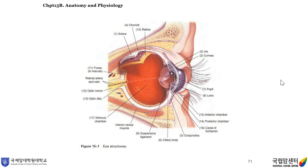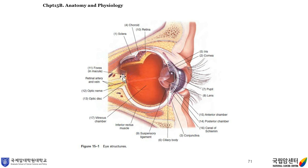Anatomy and physiology. This figure shows the eye structures. Number one: sclera. And beneath the sclera, there is choroid and also retina. In the front part, you can see the pupil, lens, iris, and cornea. There are several chambers: anterior chamber and posterior chamber, and the canal of Schlemm. You can see the conjunctiva and ciliary body, suspensory ligament. In the posterior part of the eyeball, you can see the fovea in macula and optic nerve, optic disc. And inside the eyeball, there is a vitreous chamber.